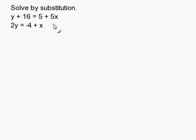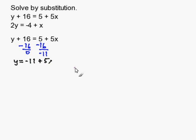So I'm going to choose the top equation and I'm going to get y by itself. To get y by itself here, I subtract 16 on both sides. My resulting equation is y equals negative 11 plus 5x.